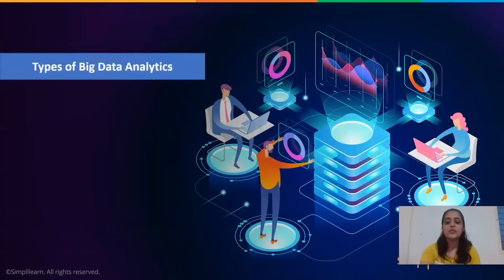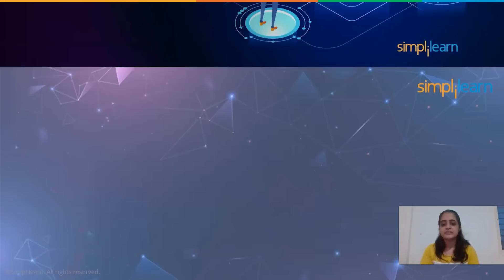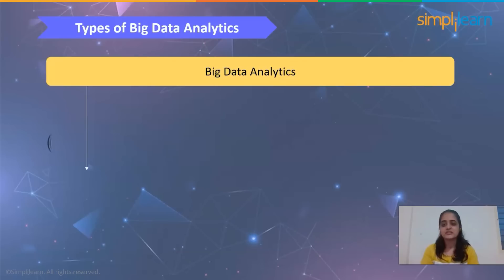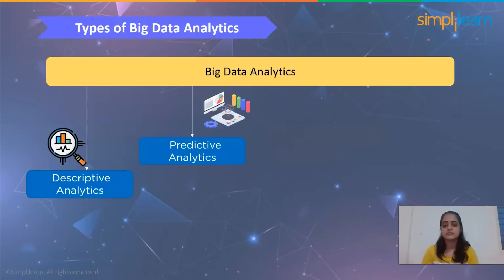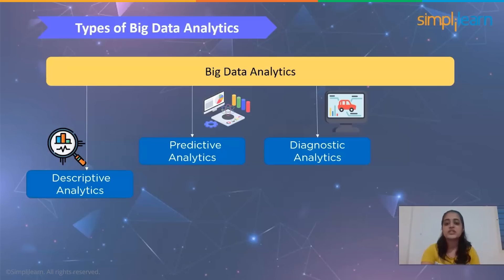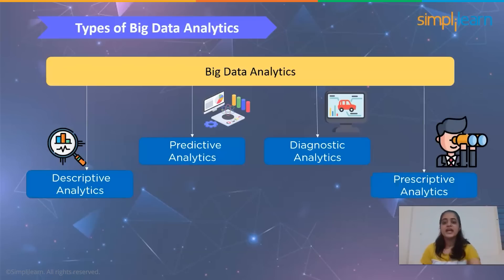Let's move forward and understand the types of big data analytics. First is descriptive analysis, which processes past and present data sets to help with trend analysis. In predictive analysis, future predictions are made based on historical data sets to help in decision making. Diagnostic analysis is an advanced system where introspections are made based on why something happened. Prescriptive analytics is the process of using data to determine an optimal course of action.